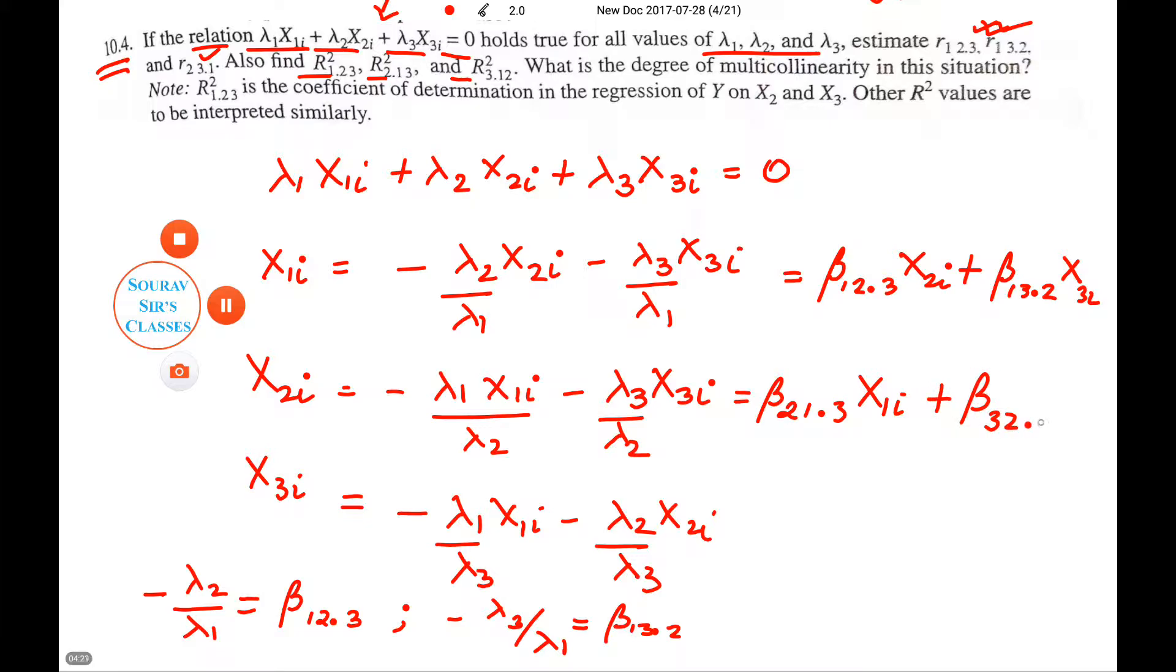X₃.₂ holding X₁ constant, i, this will be β₃.₁ X₁ᵢ + β₃.₂ X₂ᵢ.